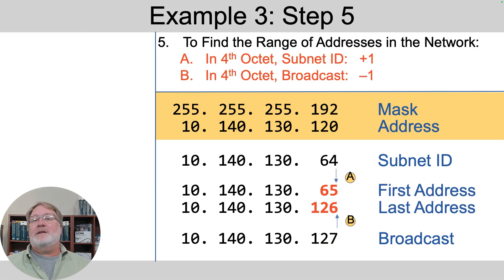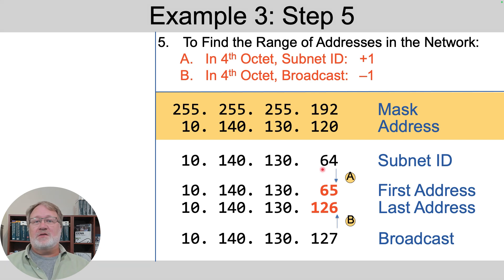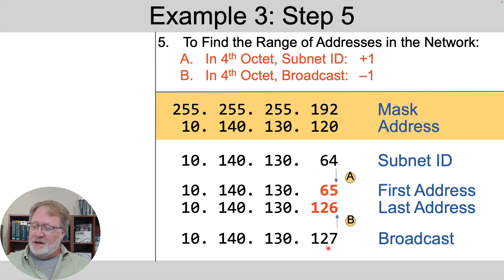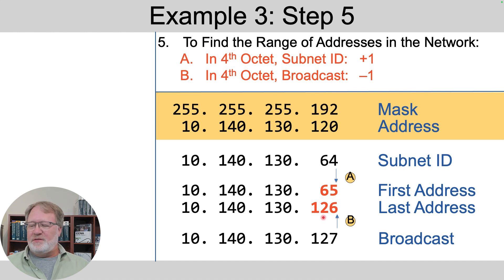Finally, to find the usable addresses: take the subnet ID's fourth octet and add one to get 65. Take the subnet broadcast address's fourth octet — which is 127 — and subtract one to get 126.